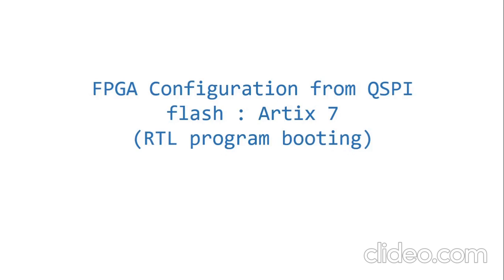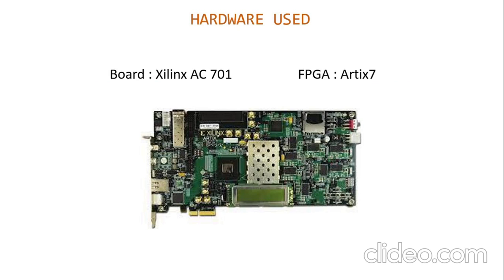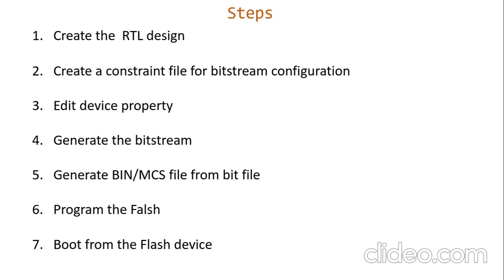Here I will be showing you how to create a flash file for your RTL design and then boot your FPGA from this flash device. For this demonstration I am using the Xilinx AC701 evaluation board, which has an Artix-7 FPGA. This board supports two configuration modes: JTAG mode and QSPI flash mode. This board has a built-in QSPI flash which you can use for storing your program. We will now go through the different steps involved one by one.